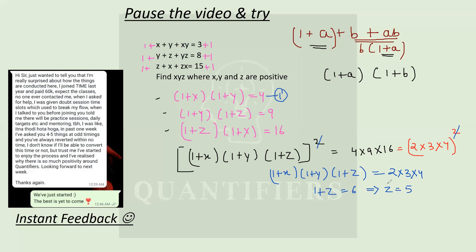So if the question asks for the value of Z, the answer is five. Similarly, using the second equation: one plus Y into one plus Z is nine. Since this part is nine, I can write one plus X equals 24 divided by nine. This gives one plus X equal to eight upon three, because three into three is nine. So the value of X is eight by three minus one, that is five by three.